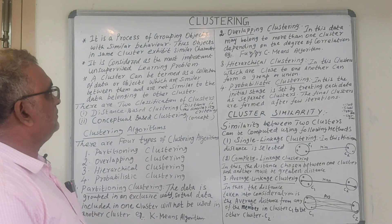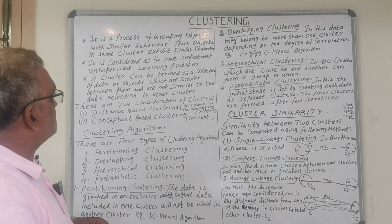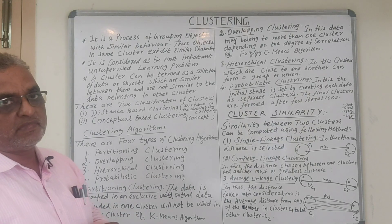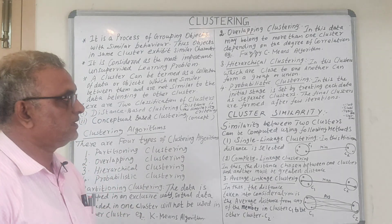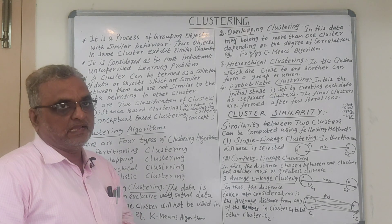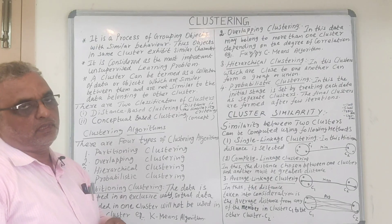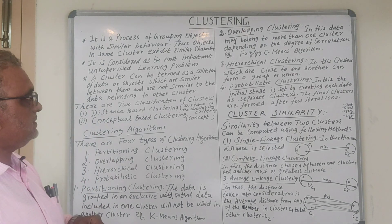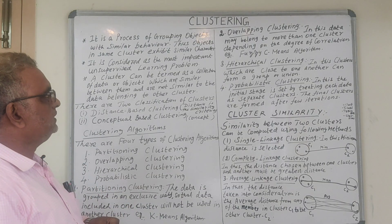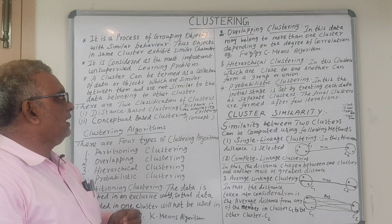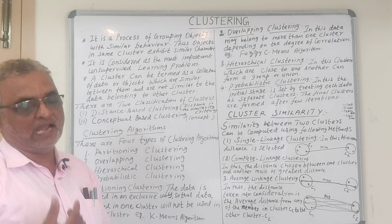Clustering is a process of grouping objects with similar behavior. Objects in the same cluster exhibit similar characteristics. A cluster can be termed as a collection of data or objects which are similar between them and are not similar to the data belonging to other clusters.